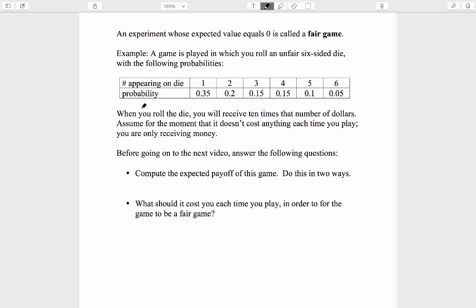All that information is given, and you are told, further, that when you roll the die, you will receive 10 times that number of dollars. So if you roll a 1, you'll get $10. If you roll a 6, you'll get $60, etc. Assume for the moment that it doesn't cost anything each time you play. We're only going to focus on receiving money here. Before going on to the next video, answer the following questions: Compute the expected payoff of this game. Do this in two ways. And, what should it cost you each time you play in order for the game to be a fair game in this technical sense?